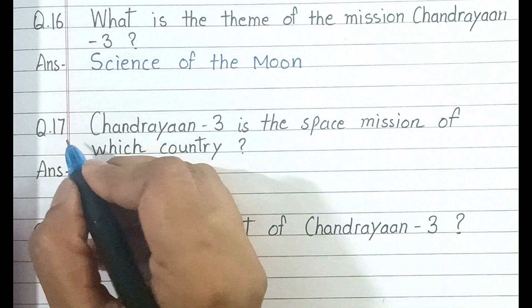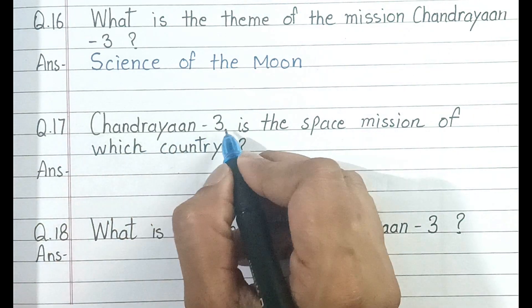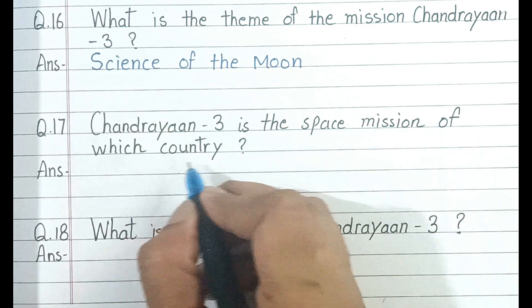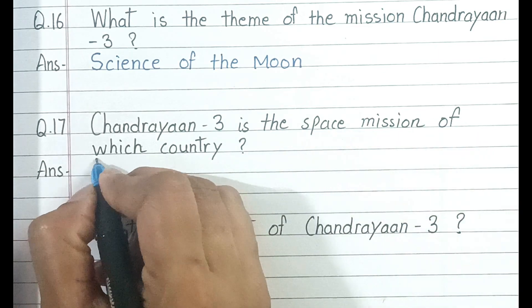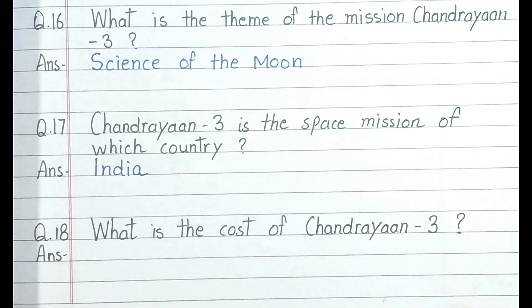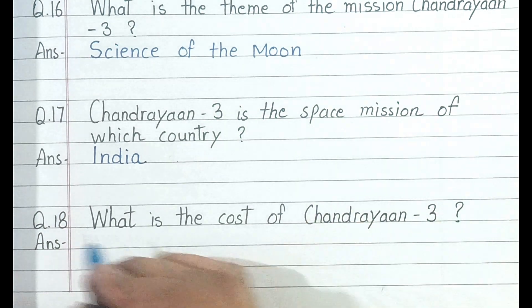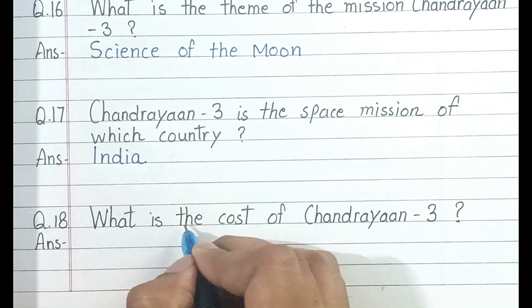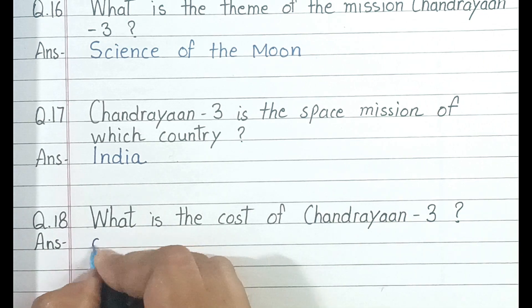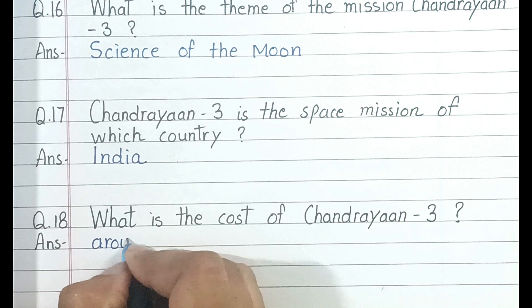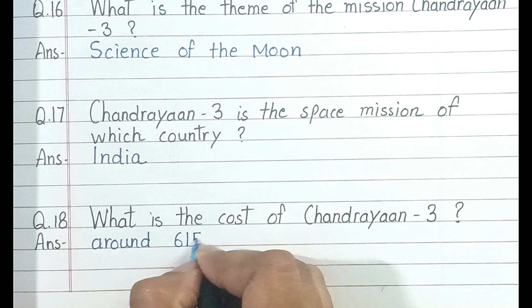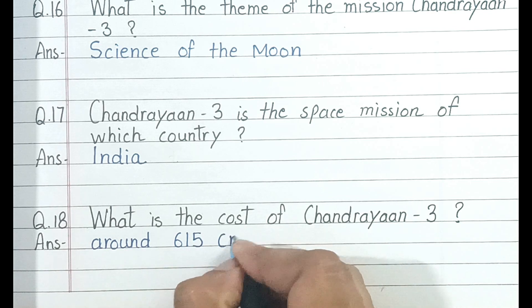Question number 17. Chandrayaan 3 is the space mission of which country? And the answer is India. Question number 18. What is the cost of Chandrayaan 3? And the answer is around 615 crore.